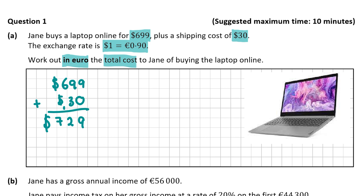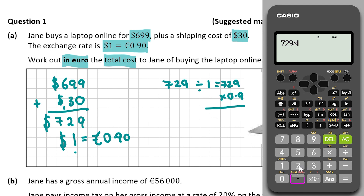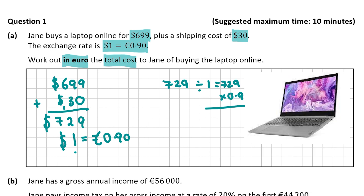So what's this in euro? The exchange rate tells us that one US dollar is equal to 90 cent. Because $729 is the cost in dollars, we divide by 1 and multiply by the euro equivalent of 0.9. So it's $729 multiplied by 0.9, and using the calculator we get 656.1 — that is €656 and 10 cent. So that's our final answer for question 1A.